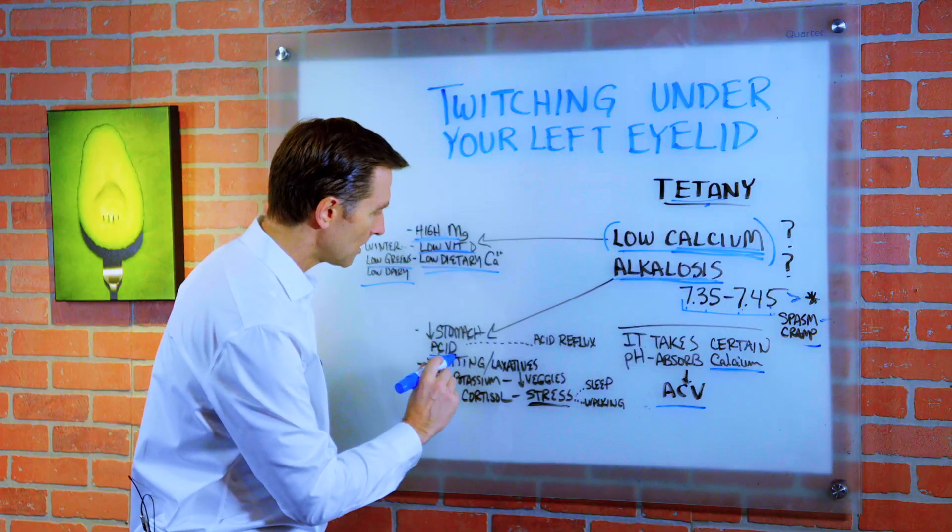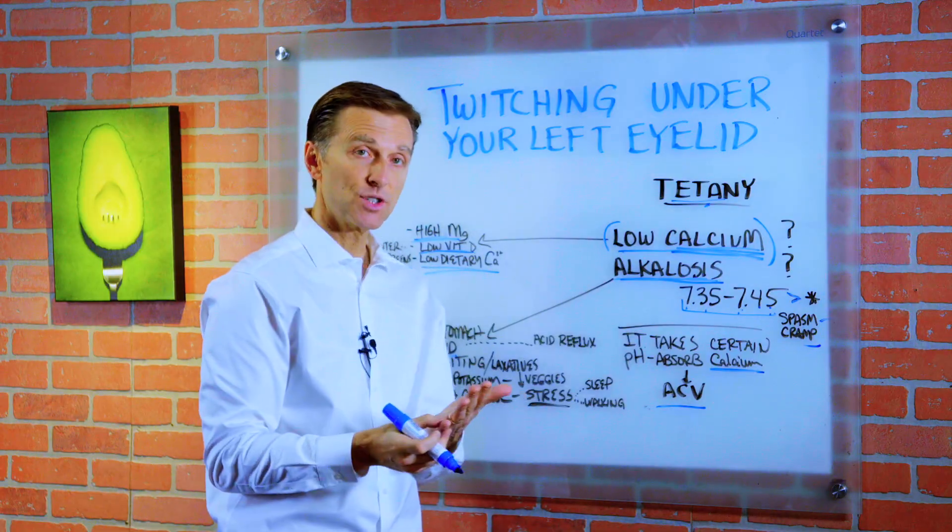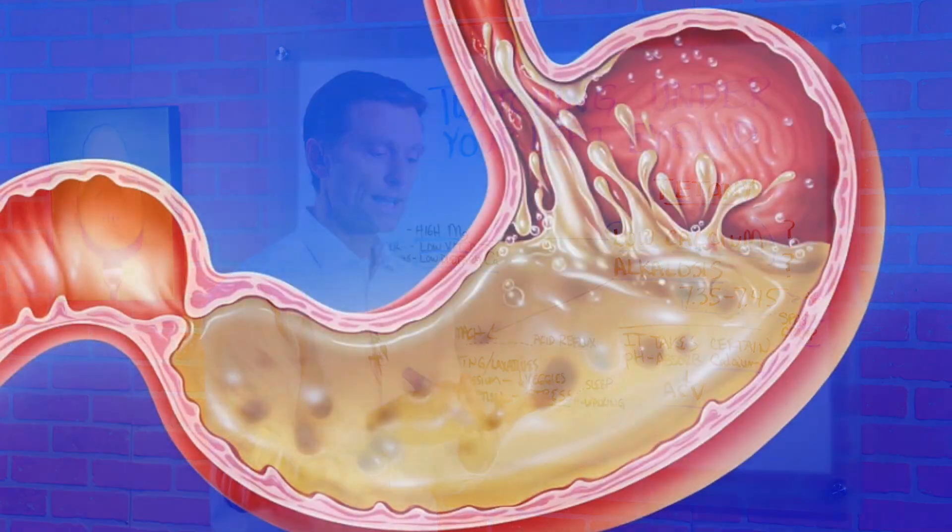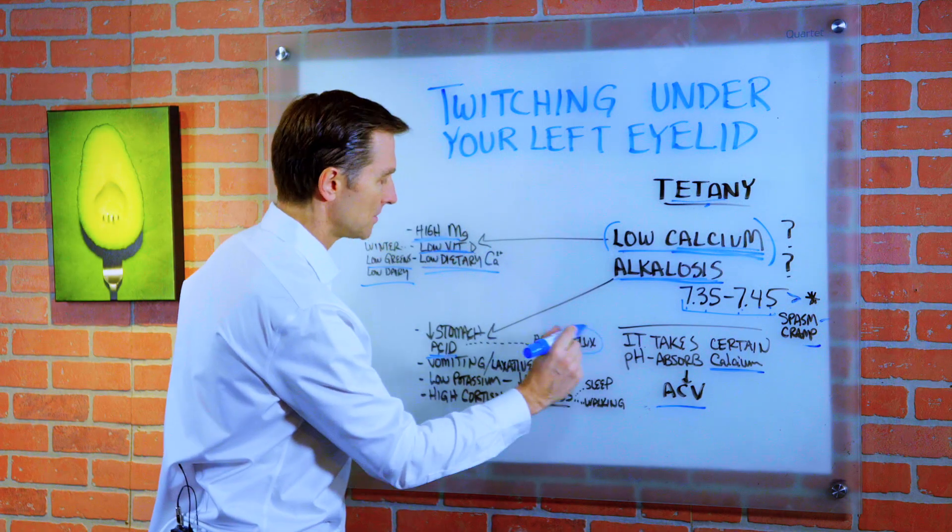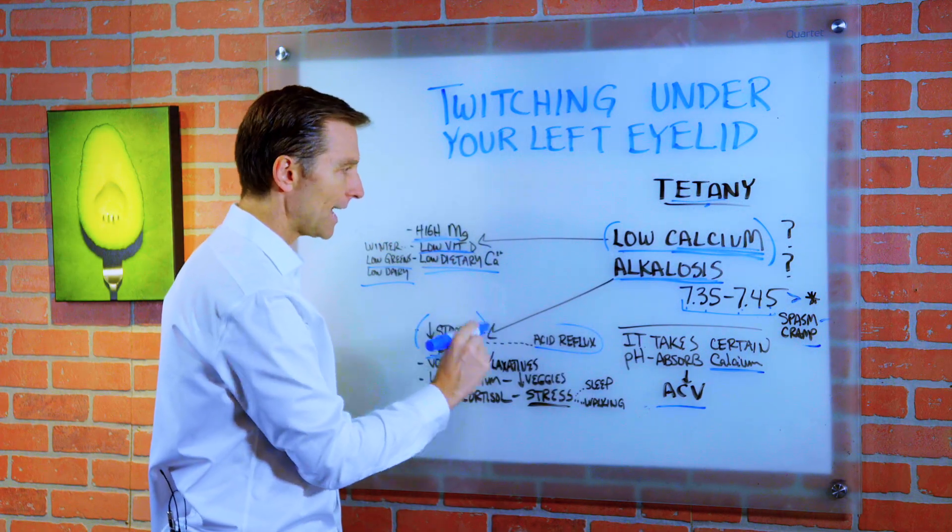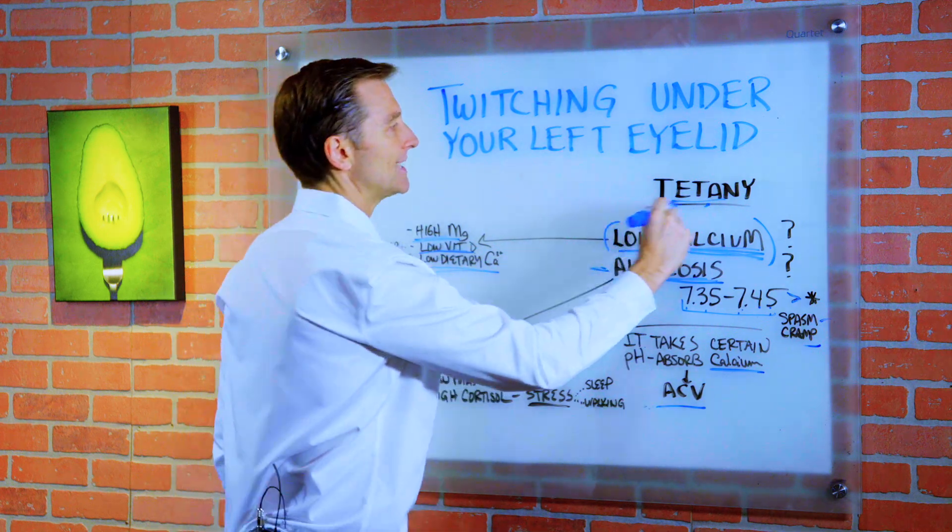So let's say you have low stomach acid. How do you know if you have low stomach acid? Well, you get indigestion, you get bloating, you get acid reflux, you get GERD. Those are all symptoms of actually low stomach acid.